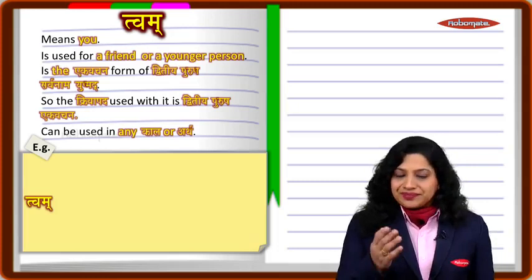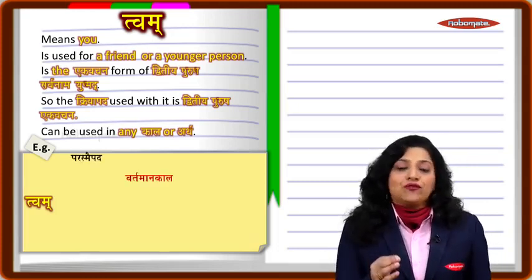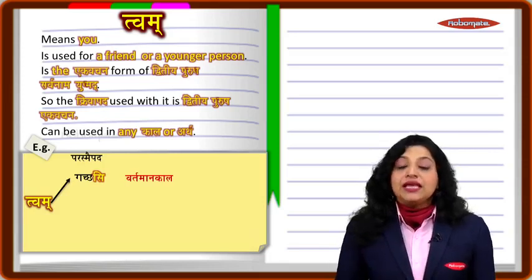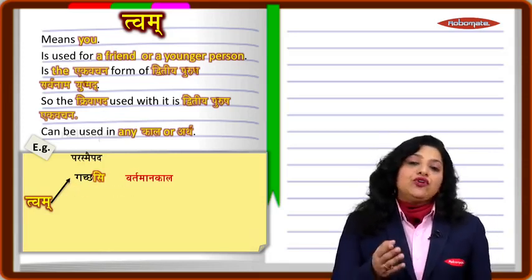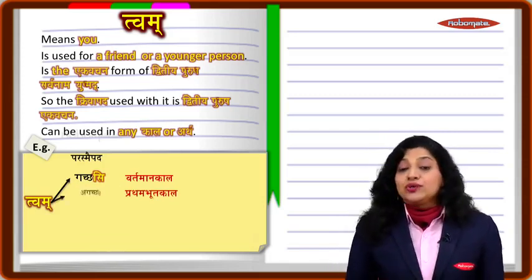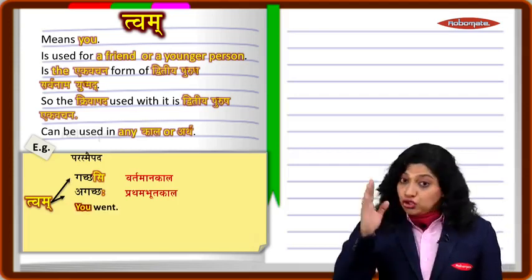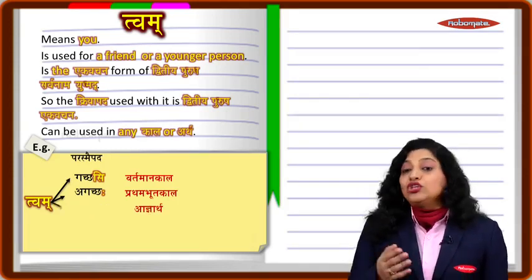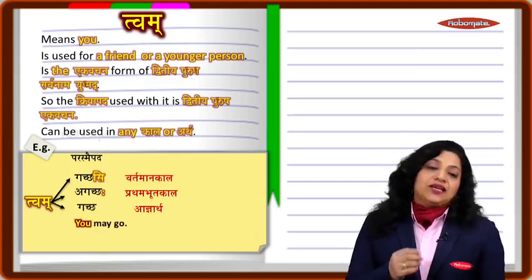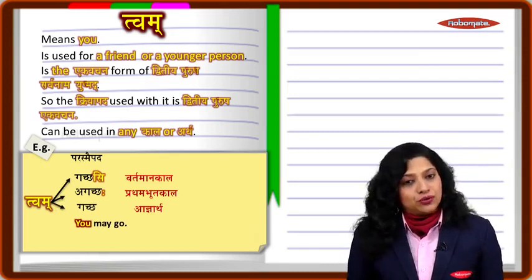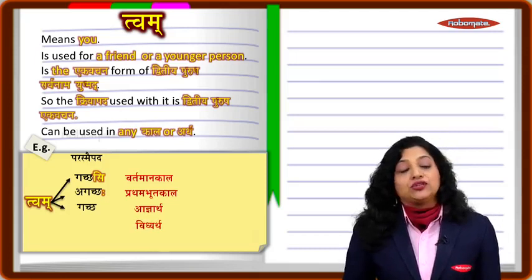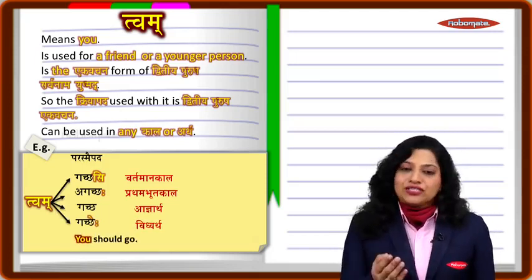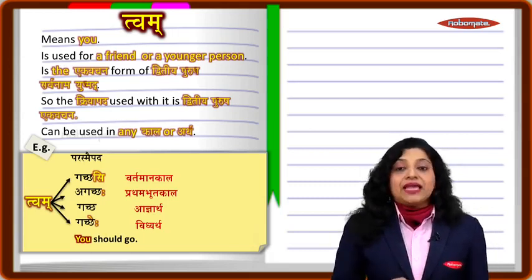You can use twam in any kala or artha. For a parasmaipada dhatu like 'gam' (gaccha, meaning 'go'), in vartamana kala you say 'twam gacchasi' — you are going. In prathama bhutakala (past tense) you say 'twam agacchah' — you went. In adnirtha (imperative mood) for an order or request you say 'twam gaccha' — you go. And in vidhyartha (to indicate necessity) you say 'twam gaccheh' — you should go.